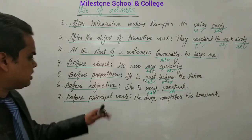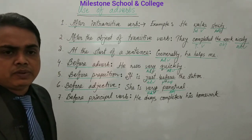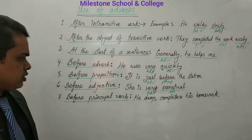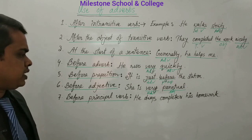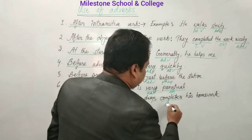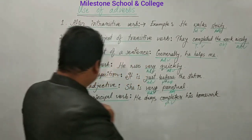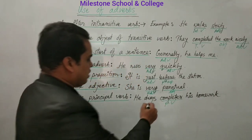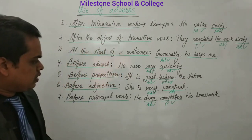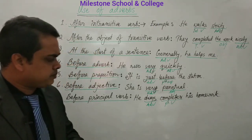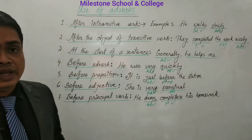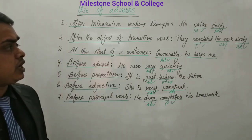Before the principal verb, the main verb of the sentence is called the principal verb. There are also helping/auxiliary verbs. Before the principal verb, we use an adverb. Example: 'He always completes his work.' Here, 'always' is the adverb used before the principal verb 'completes.' In this way, dear students, we can use an adverb.